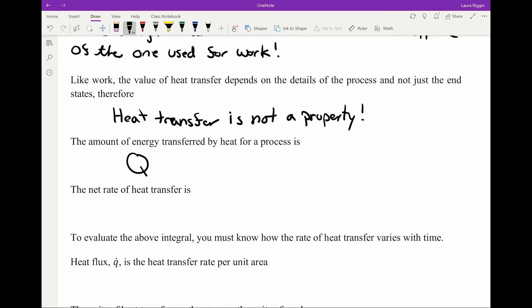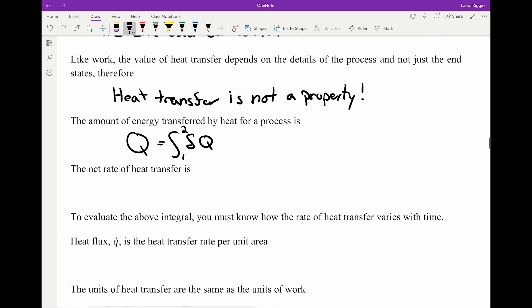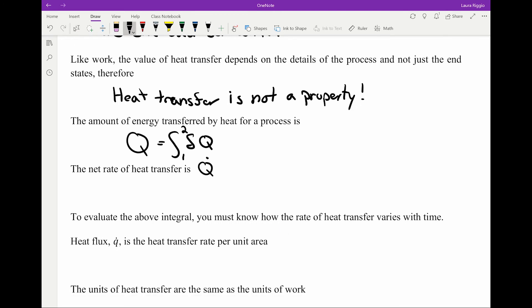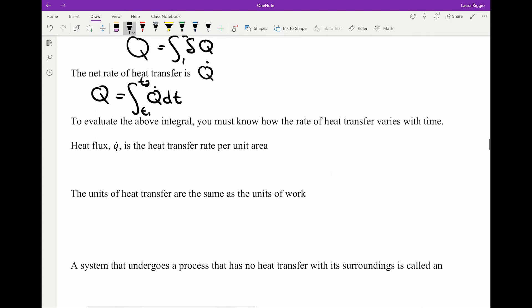The amount of energy transferred Q is the integral from state 1 to 2 of our differential heat transfer rate. The net rate of heat transfer, Q dot, so our heat transfer is the integral from time 1 to time 2 of our heat transfer rate with respect to time.